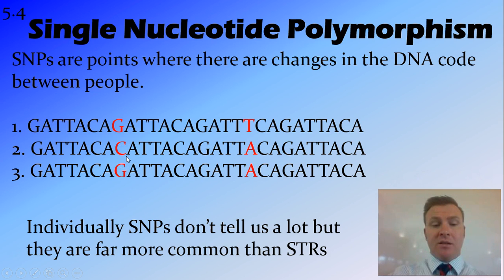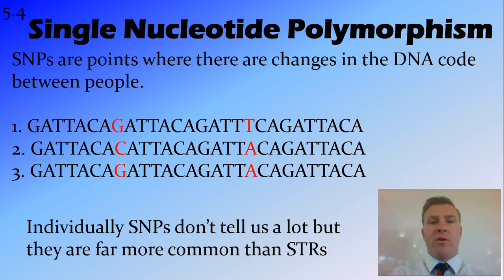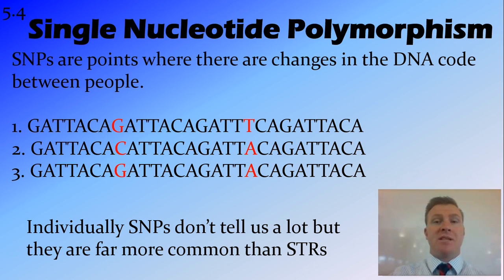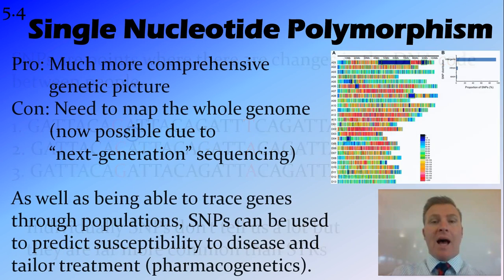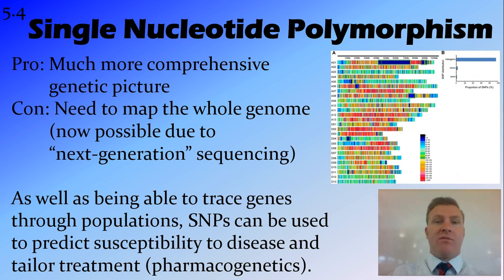Individually a single SNP doesn't tell us a lot — you need around three SNPs to give the same amount of information as one STR. However, SNPs are much more common than STRs, about 15 times as many, and we've mapped thousands of them. On the Y chromosome alone there are 100,000 known SNPs to look at, giving a much more comprehensive genetic picture.